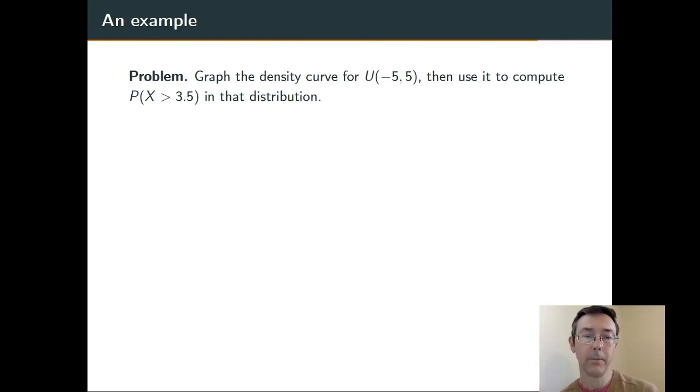Let's do one complete example. Graph the density curve for the uniform distribution U(-5,5), and then use it to compute the probability that X > 3.5 in that distribution.